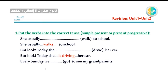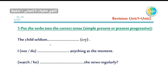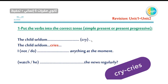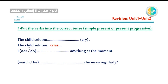Number five: 'Every Sunday, we go to see my grandparents.' Every Sunday is the routine — present simple. We go. Number six: 'The child seldom cry.' Adverbs of frequency like seldom, always, usually, often always come with present simple. The child is singular. We delete the Y and add -IES. The child cries.